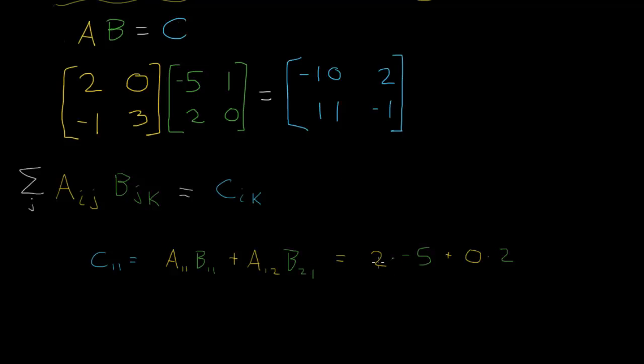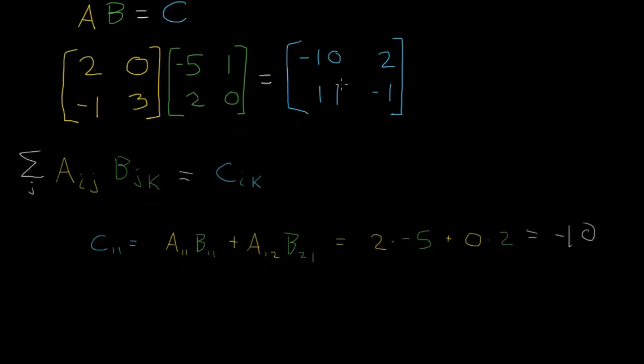Anyway, so if we multiply these, we get 2 times negative 5 equals negative 10, and then we add 0 times 2, which is 0. So this equals negative 10, just like this element here. So maybe we can do one more of these, write down one more of the elements like this, and we'll get the same thing again.